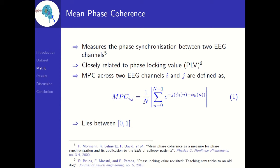Coming to the metric used in the study: mean phase coherence measures the phase synchronization between two EEG channels. It is closely related to phase-locking value but doesn't require the trials to be time-locked. MPC values between two EEG channels I and K are given by equation 1. N is the total number of time samples, and phi of N denotes the instantaneous phase, which is calculated using the Hilbert Transform. MPC values lie between 0 and 1, with 0 for random phase and 1 for synchronized phase.